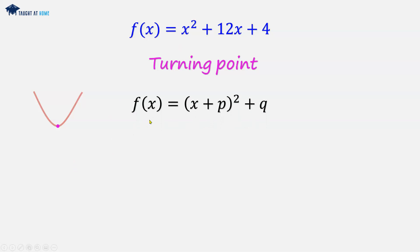So we're going to complete the square: x plus p squared plus q. So p is half of 12, which is 6. And then 6 squared is 36, but we want 4. So we're going to have to subtract 32 to give us 4. So q in this case will be minus 32.